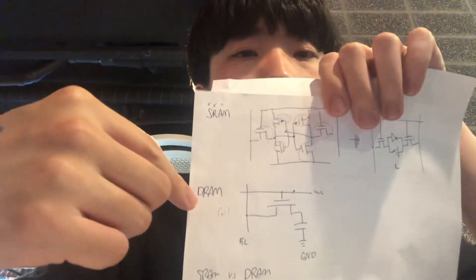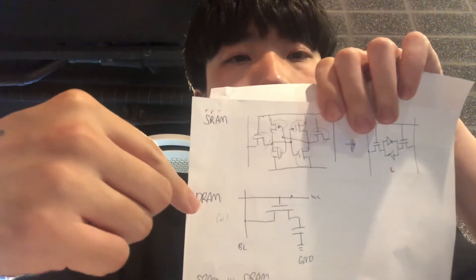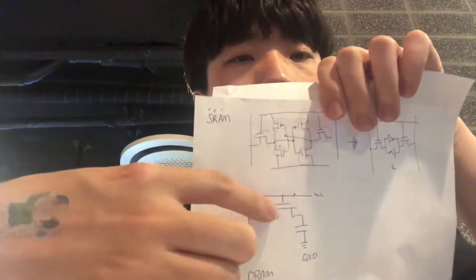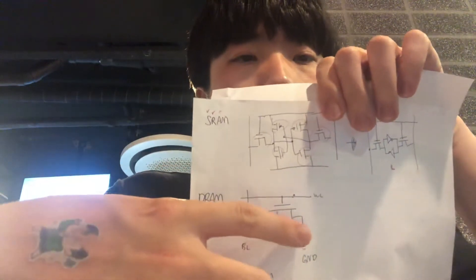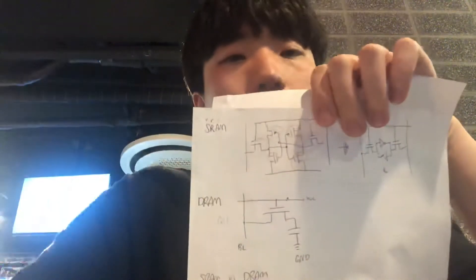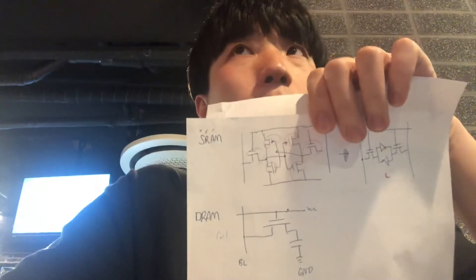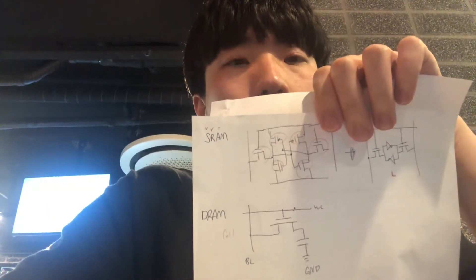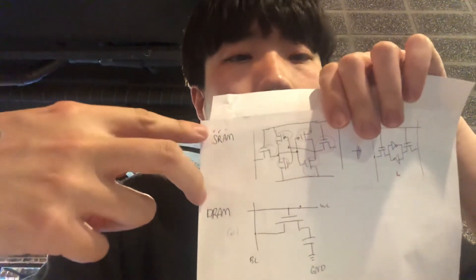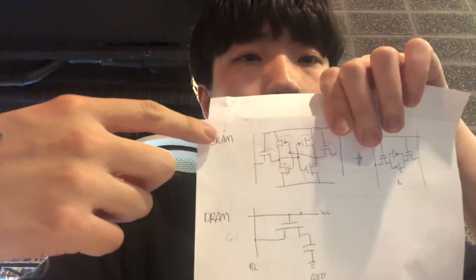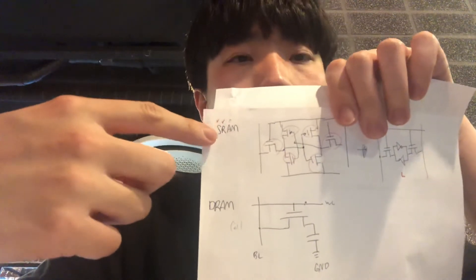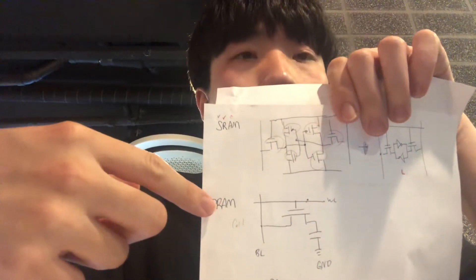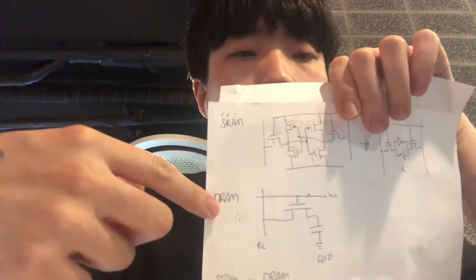DRAM is dynamic random access memory. It's composed of one transistor and one capacitor. Comparing the two: SRAM has six transistors per one cell, and DRAM has one transistor and one capacitor per one cell.